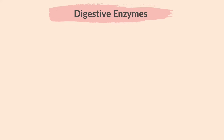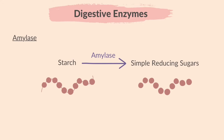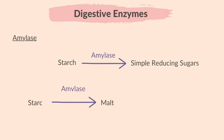First we must learn the functions of enzymes in the digestive system. The enzyme amylase breaks down starch to simple reducing sugars. Amylase first breaks down starch to maltose, and then maltase breaks down maltose to glucose.